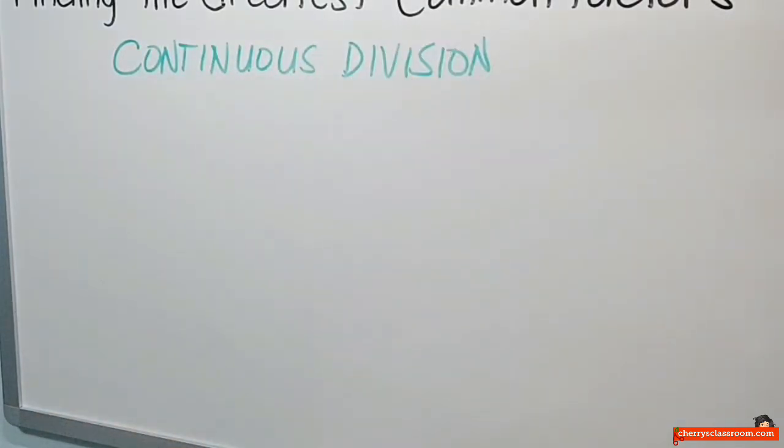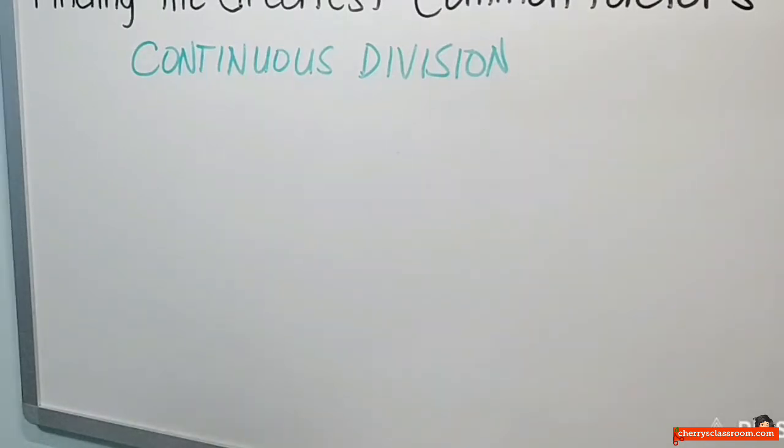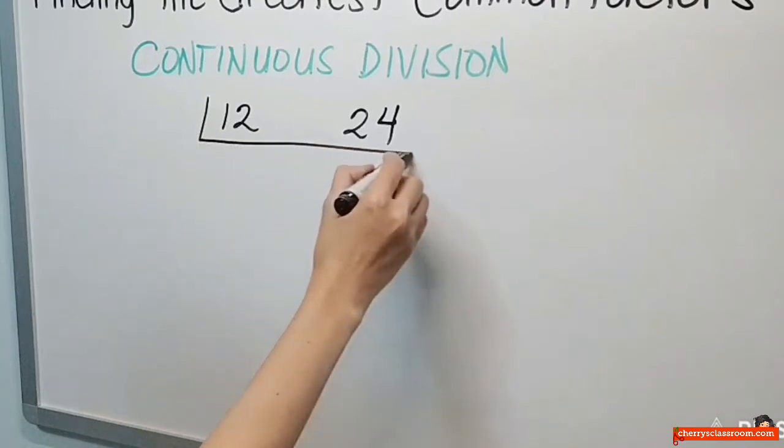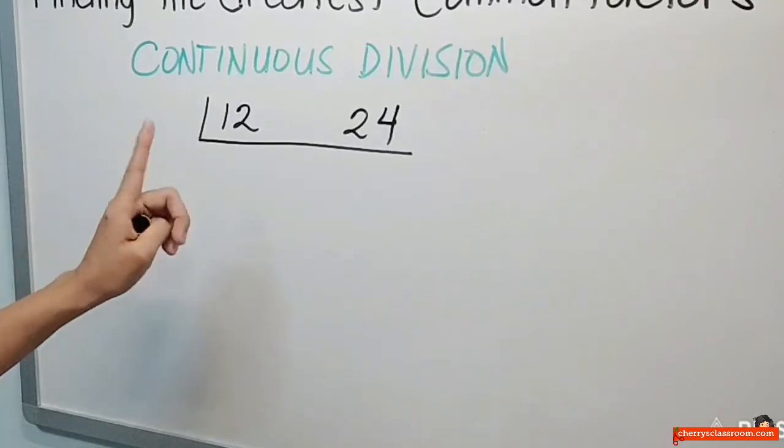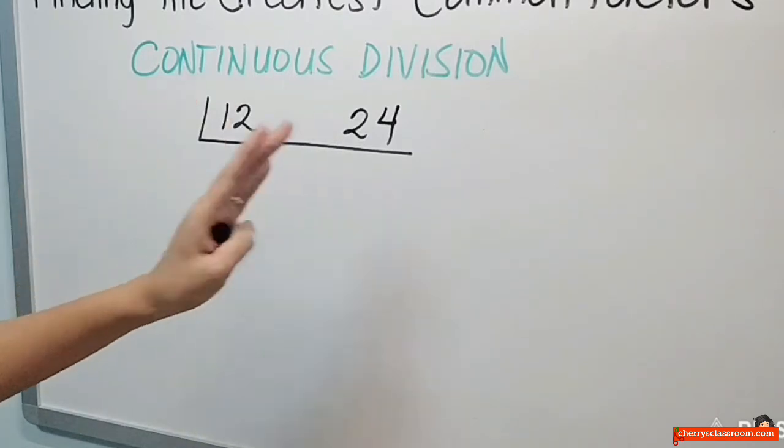Ang kuling method natin ay tinatawag na continuous division. Sa continuous division, nagte-divide dyan gamit ang mga prime numbers. So, ililista natin ang dalawang number. Yung kanina yung nahanap natin ang kanilang greatest common factor which is ang 12 at ang 24. At i-divide mo sila sa parehong prime number. Maghahanap ka ngayon ng isang prime number na pwedeng i-divide sa 12. At the same time, pwede mo rin siyang i-divide sa 24.